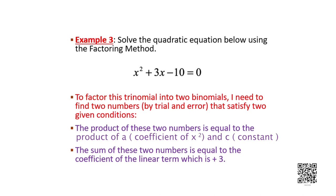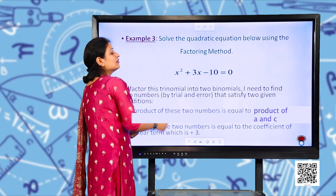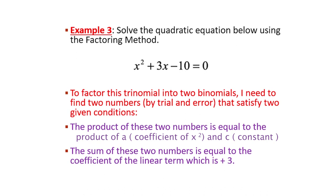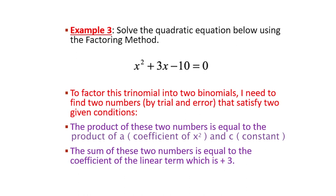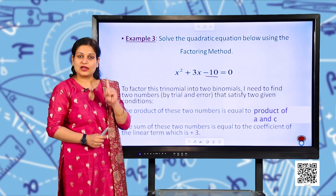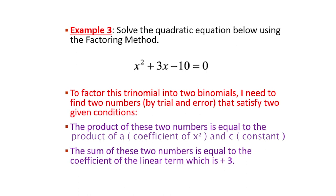Let us solve another example. Solve the quadratic equation below using the factoring method: x² + 3x − 10 = 0. To factor this trinomial into binomials, I need to find two numbers by trial and error that satisfy two conditions. Their product must equal A times C, which is −10, and their sum must equal the coefficient of the linear term, which is +3.